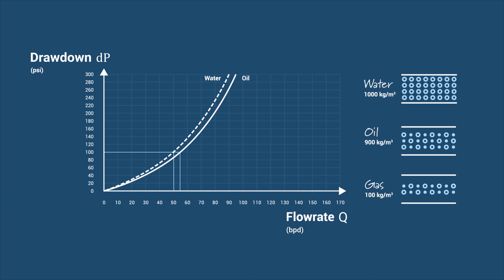Gas has a density of 100 kilograms per meter cubed, approximately 10 times lower than that of both water and oil. When it breaks through at 100 psi, then the well will produce 160 barrels of gas per day per production valve.